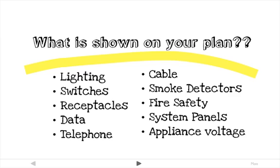Items typically shown on your plan include lighting, switching, receptacles, data and telephone and cable outlets, smoke detectors, fire safety equipment including fire alarms and fire exit signs, system panels showing where electricity can be accessed, and specific appliances that need higher voltage, like range ovens or dryers.